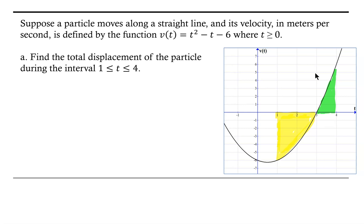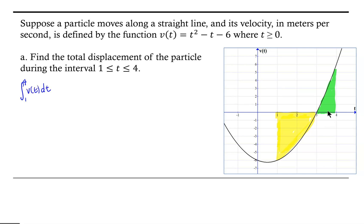Notice that the area on the interval from 1 to 3 below the x-axis appears larger than the area on the interval from 3 to 4 above the x-axis. So we might anticipate that the displacement will be in a negative direction — to the left of the initial point. The total displacement is the integral from 1 to 4 of the velocity function dt.